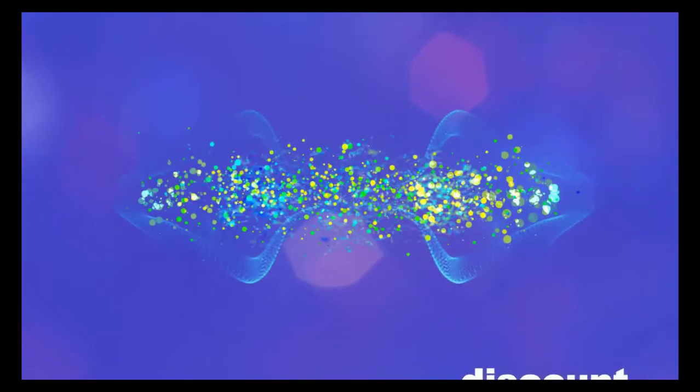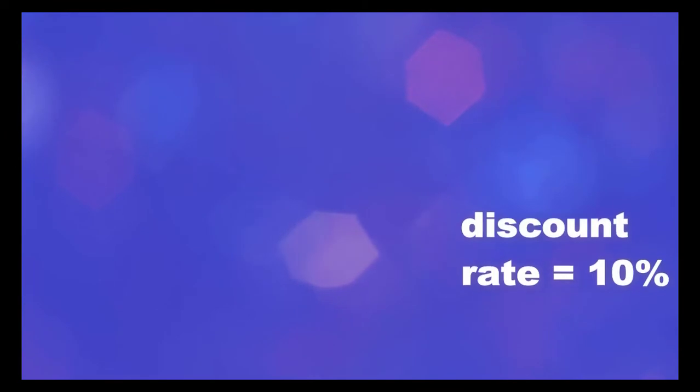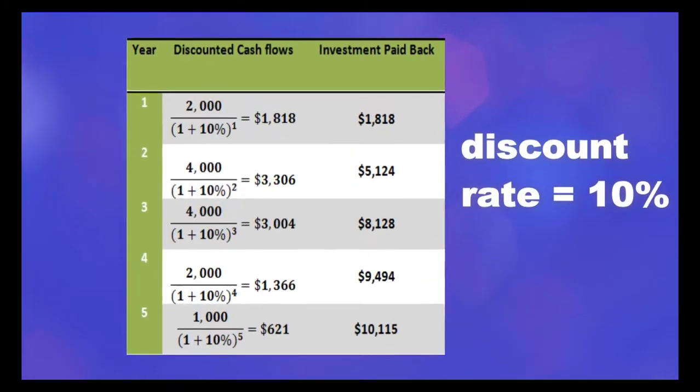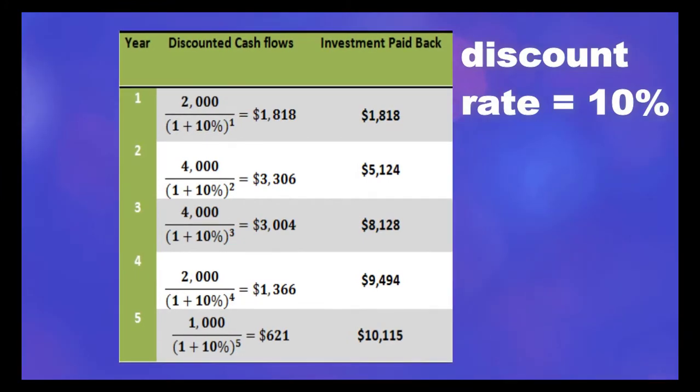Suppose that the discount rate of this project is 10%. To find out the discounted cash flows, we need to discount these annual cash flows using the discount rate. In present terms, you will be recovering your investment fully in approximately five years.